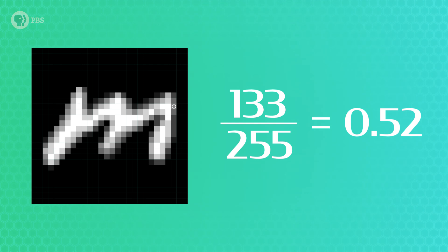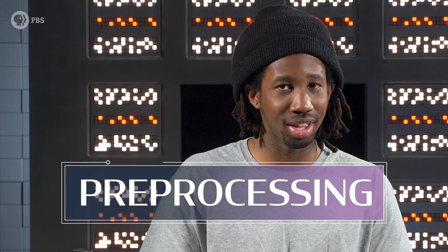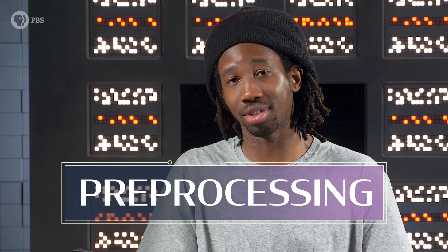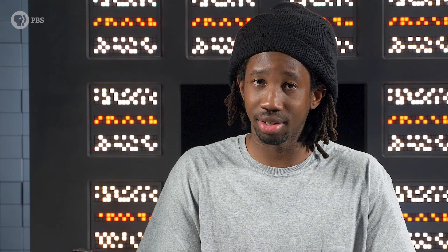Performing a transformation like this to make the data easier to process is a machine learning method called preprocessing. By the way, we'll need different preprocessing steps for different types of data. Alright, it may take a few seconds to download and process all the images.